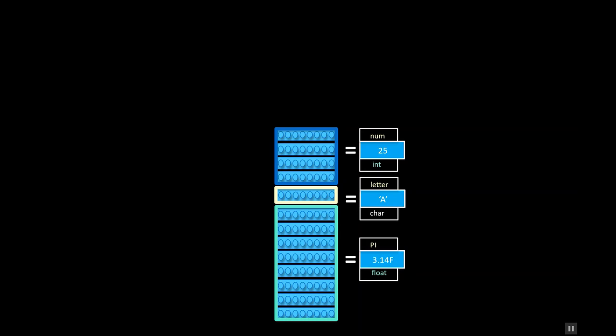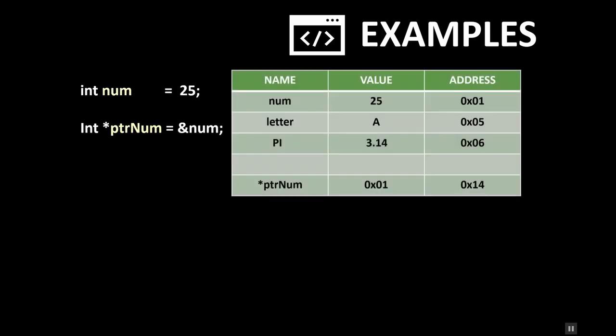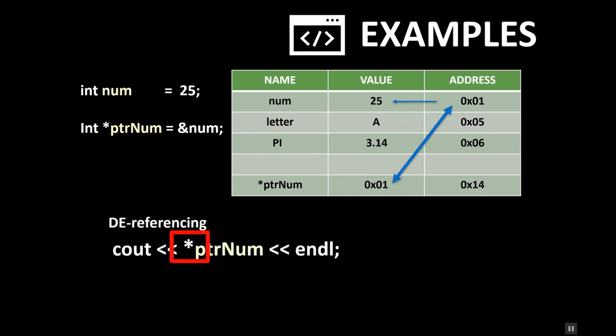Using our variable and pointer, let's look at an example of how this is used. Here is a chart of the variables we've discussed. Note again the value assigned to the pointer is the address of the num variable. But what I want is access to the num variable's value 25. In order to get that, I need to dereference the variable using the asterisk. If I don't use the asterisk, I just output the address of the num variable.